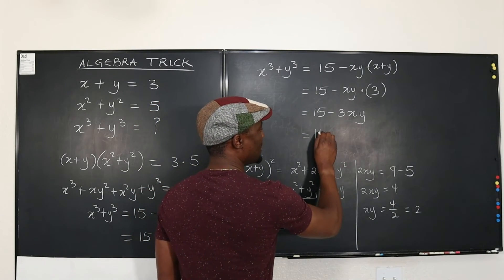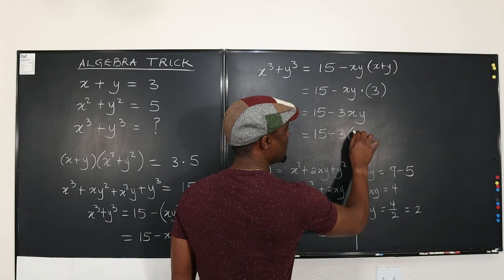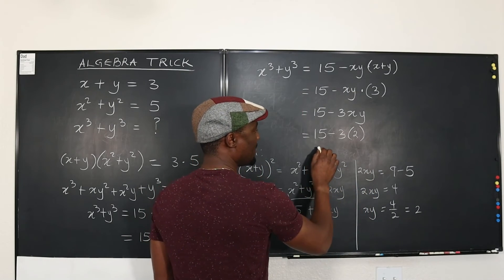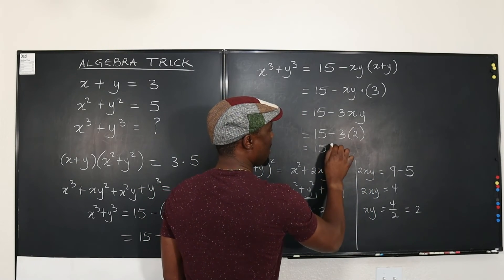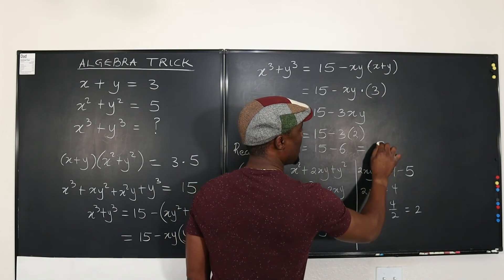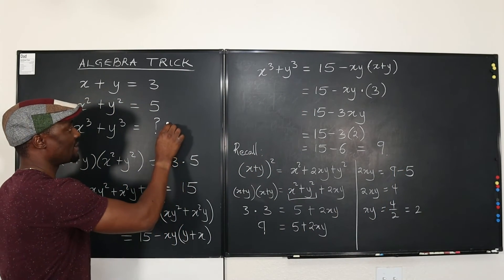I'm going back here and saying this is 15 minus three times two, which is 15 minus six, which is equal to nine. And that's my answer.